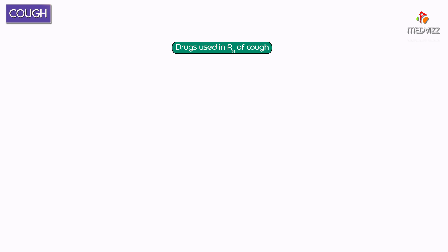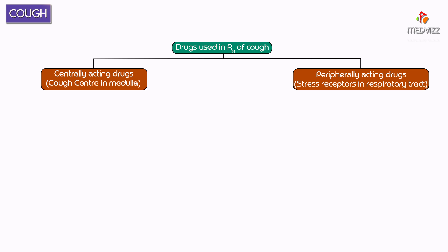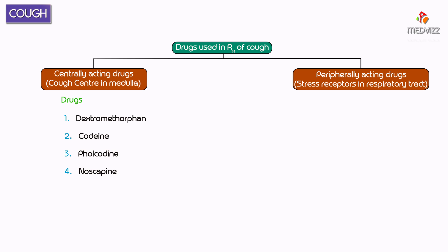Drugs can suppress cough by acting on the cough center in the medulla or on the stretch receptors of the respiratory tract. Acting on the cough center in the medulla is centrally acting, whereas stretch receptors in the respiratory tract represent the peripheral site. Centrally acting drugs include dextromethorphan, codeine, folcodeine, noscopine, and diphenhydramine.